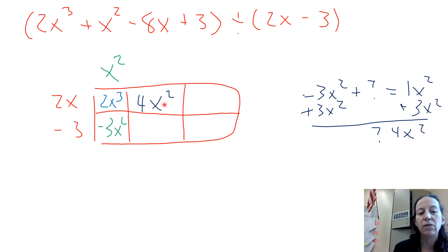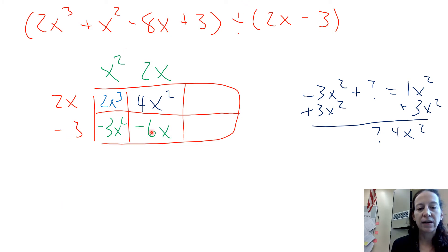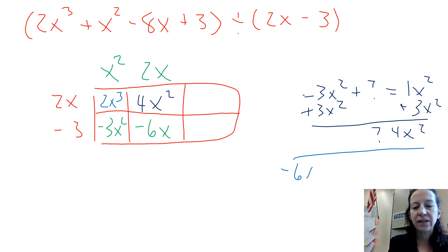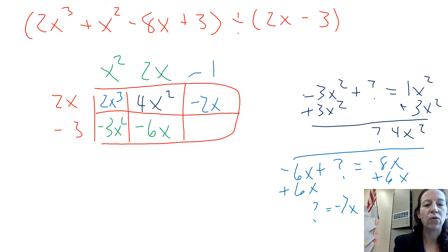Repeating the process: 2x times what gives me 4x squared? That's 2x. Then 2x times negative 3 gives me negative 6x. On this next diagonal, negative 6x and the unknown have to add up to negative 8x. So negative 6x plus what gives me negative 8x — add 6x and we get negative 2x. So negative 2x goes in that box. Then 2x times what gives me negative 2x? That would be negative 1. And negative 3 times negative 1 is positive 3, which matches the original polynomial.